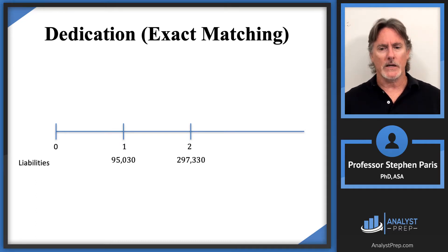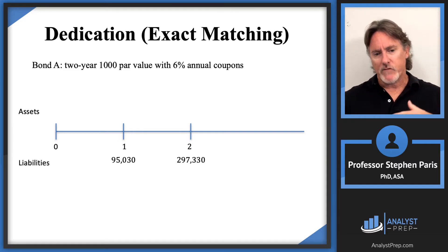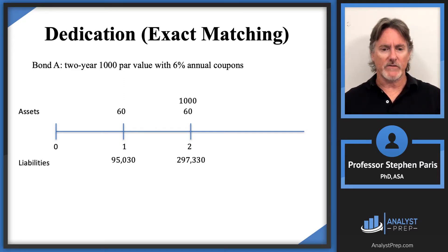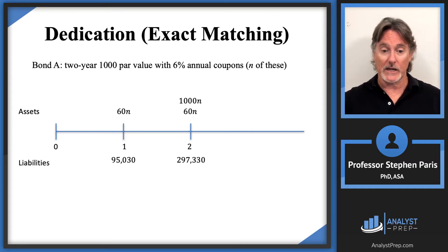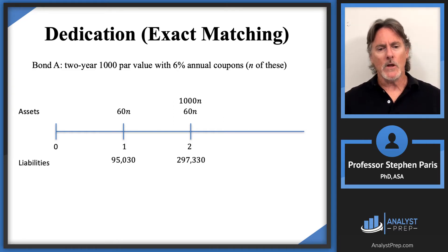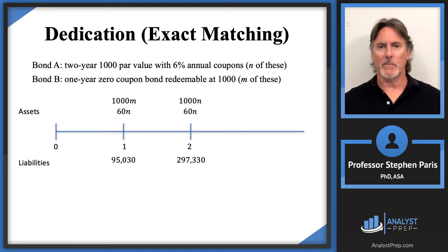For Bond A — a two-year bond with $1,000 par value and 6% annual coupons — each bond pays a coupon of $60 at time one and time two, plus redemption of $1,000 at time two. Buying n of these gives coupons of 60n at each coupon date and redemption of 1,000n. For Bond B, a one-year zero coupon bond redeemable at $1,000, buying m of them gives 1,000m at time one.